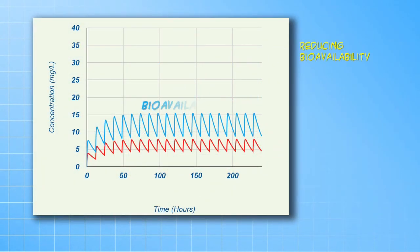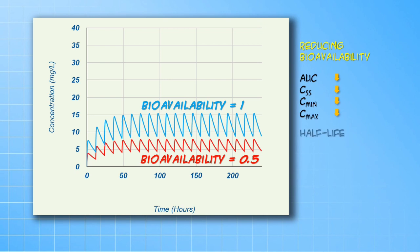Reducing the bioavailability essentially just reduces the effective dose. Therefore, all the concentrations reduce proportionately. Half-life is unchanged since there are no changes to either volume of distribution or clearance. Consequently, since time to reach steady state takes approximately five half-lives, the time to steady state is unchanged.